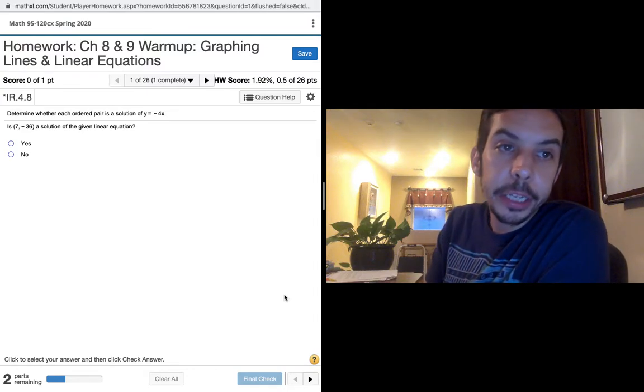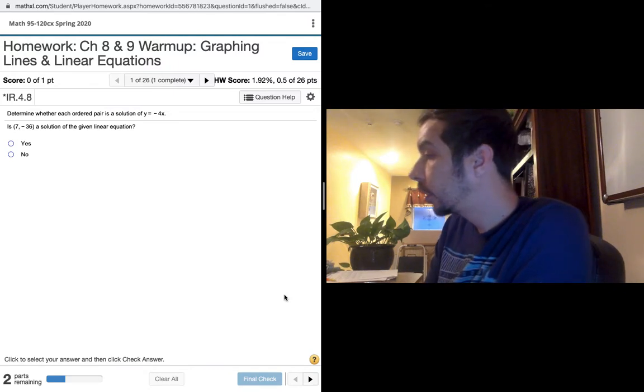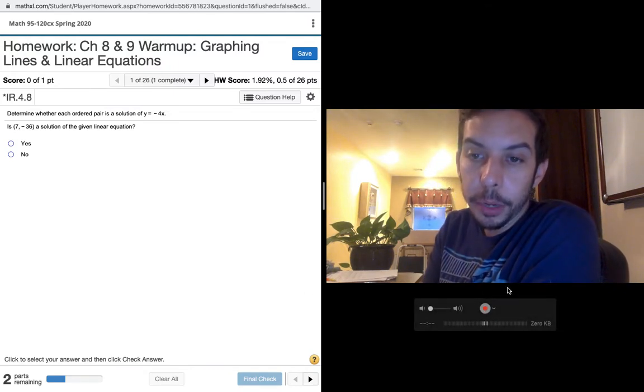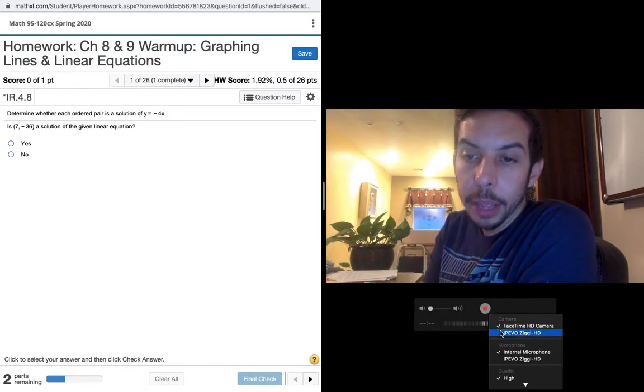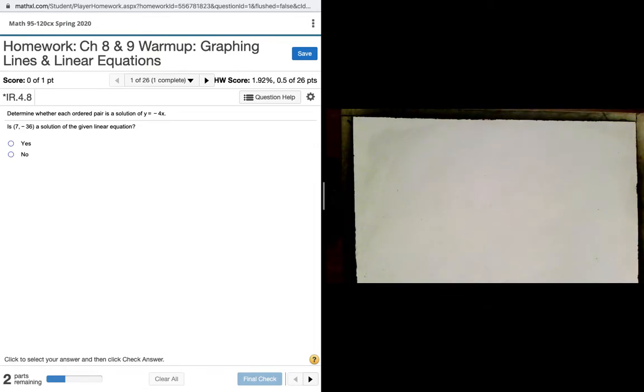In this video, we're going to discuss graphing lines and linear equations. Just as a recap from our video on point and slope, remember that a line is a collection of points that are given to us as input and output, where x is our input, our independent variable, and y is our output, our dependent variable.